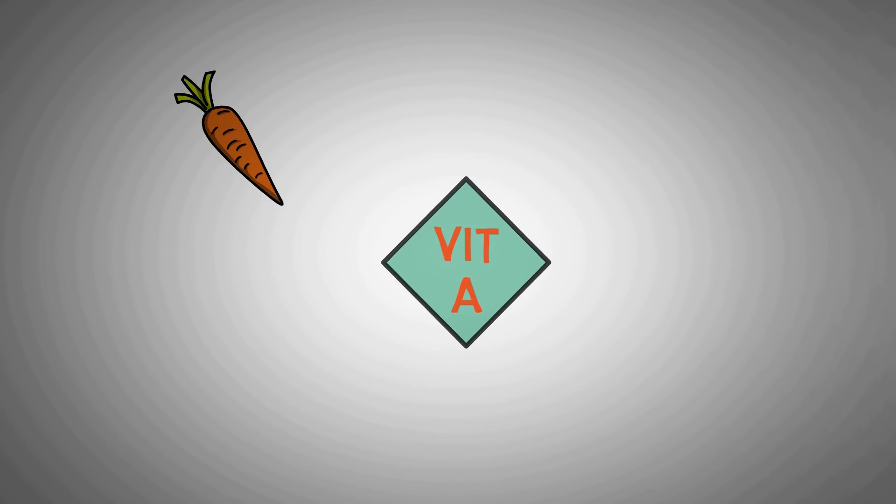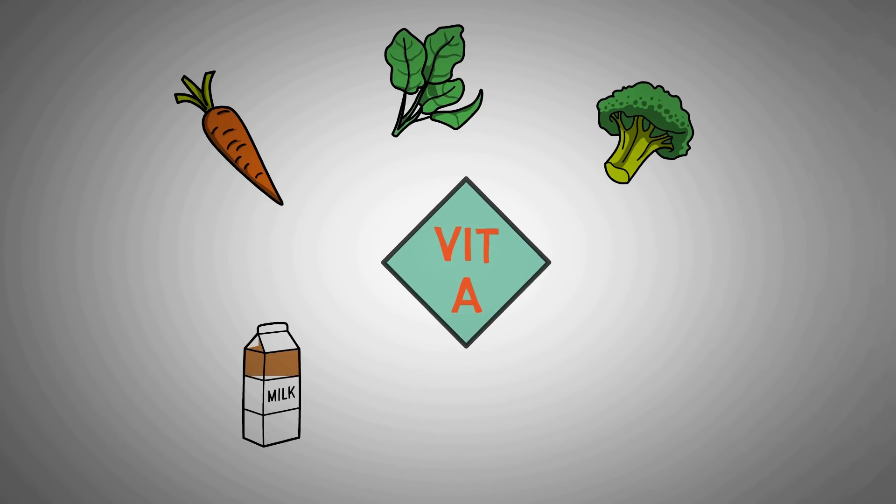Vitamin A can be found in vegetables such as carrots, spinach, broccoli and cabbage. Also, it is found in dairy products like milk, butter and even fruits like melons, apricots and mangoes.